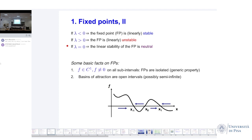If lambda is less than zero, then the fixed point is linearly stable — this is true as long as we can neglect terms of order c-squared. Positive lambda is unstable, and c is not going to be small. Lambda equals zero, the stability is what's called neutral. Some basic facts: if f is continuously differentiable and not identically equal to zero on any sub-interval, then the fixed points are isolated. This is the sort of stuff I mentioned this morning — under such circumstances, bifurcation points are going to be isolated.